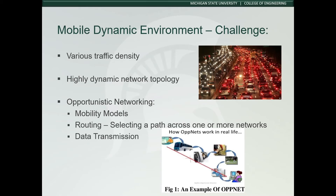The second challenge involves a mobile dynamic environment. In certain areas of high traffic density or full frequency bands from other people constantly trying different cells, it creates the issue of interference for mobile systems. You've experienced this if you've ever gone to a Tigers baseball game. Opportunistic networking involves networks that exploit human social characteristics such as similarities, daily routines, mobility patterns, and interests to perform message routing and data sharing. It plays a significant role in mobile CPS as it provides opportunities to connect highly mobile components. There are three aspects of research dealing with mobility in opportunistic networking: mobility models, routing, and data transmission.